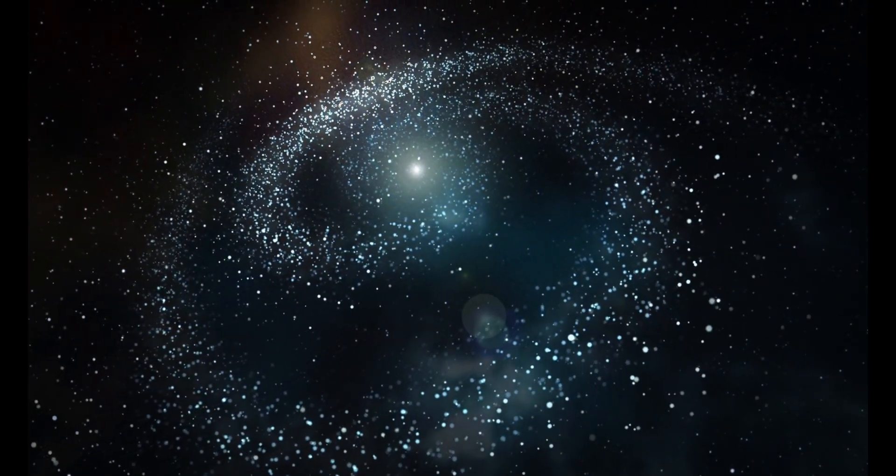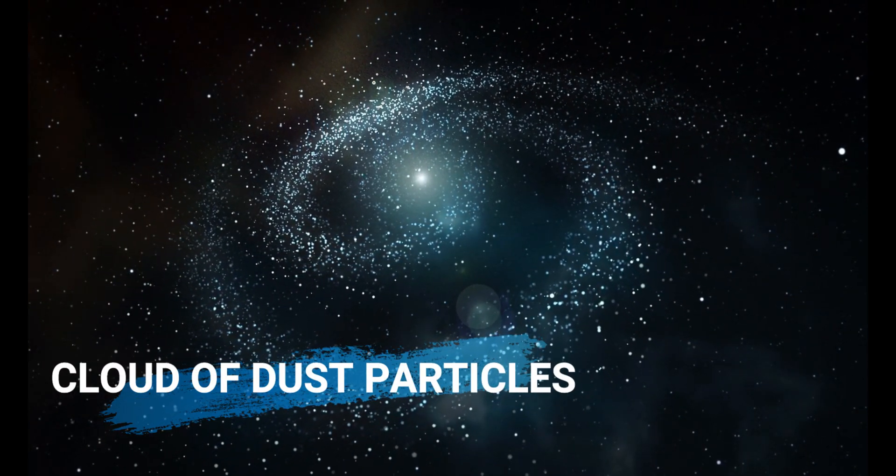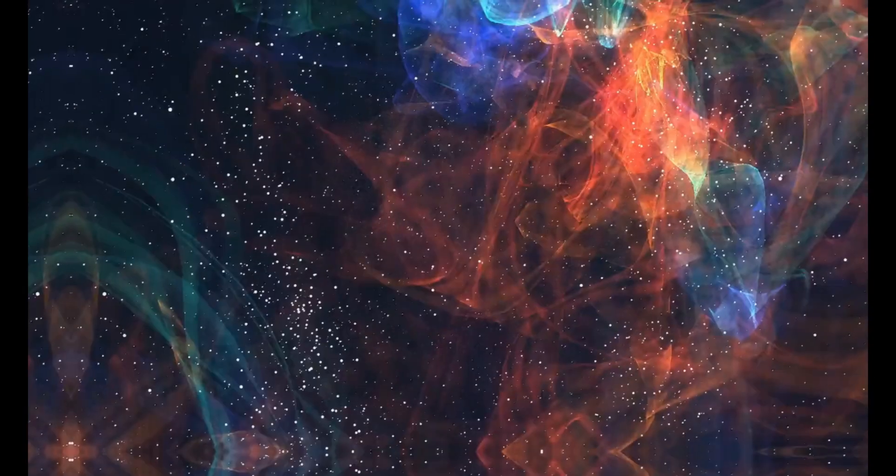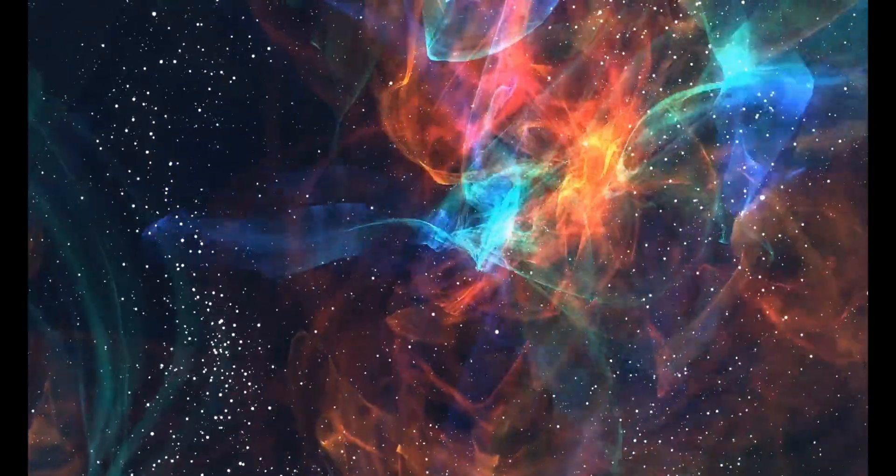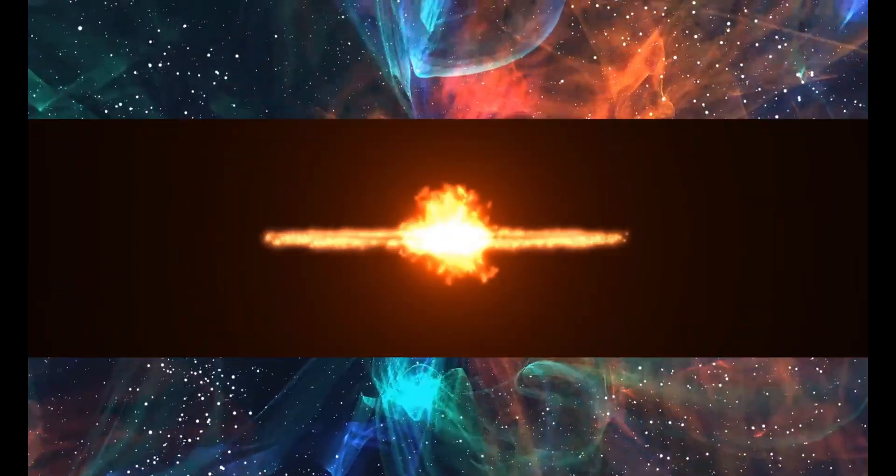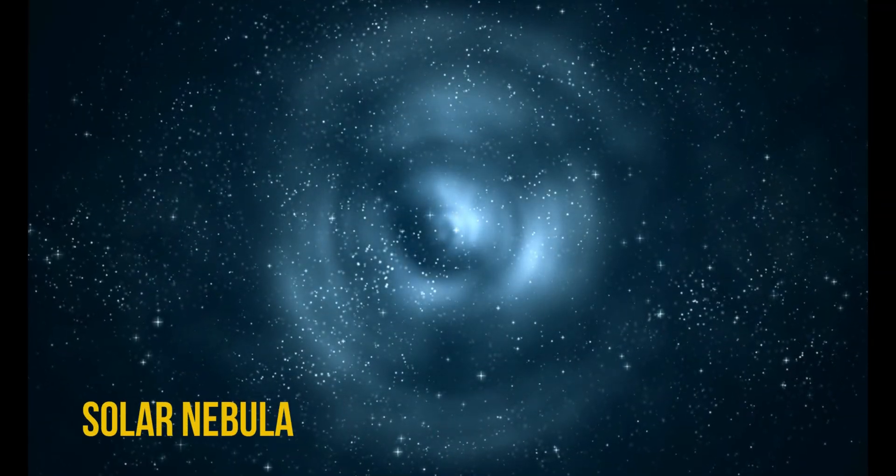Several billion years ago our solar system was nothing but a cloud of cold dust particles rolling through empty space. It all started when a giant cloud of gas and dust was disturbed by the explosion of a nearby star and started to collapse as gravity pulled everything together, forming a solar nebula, a huge spinning disk.